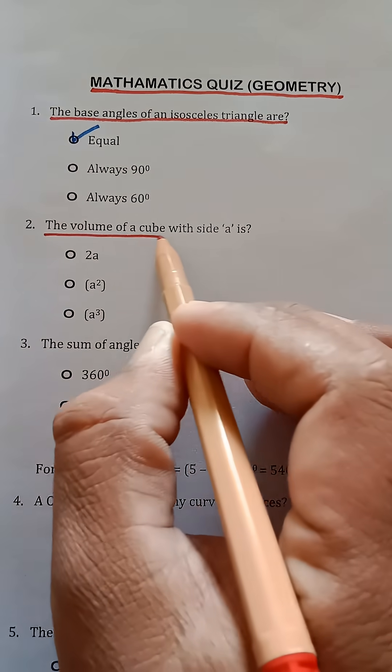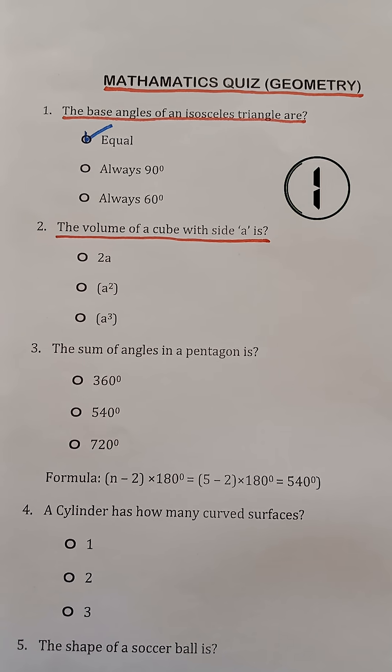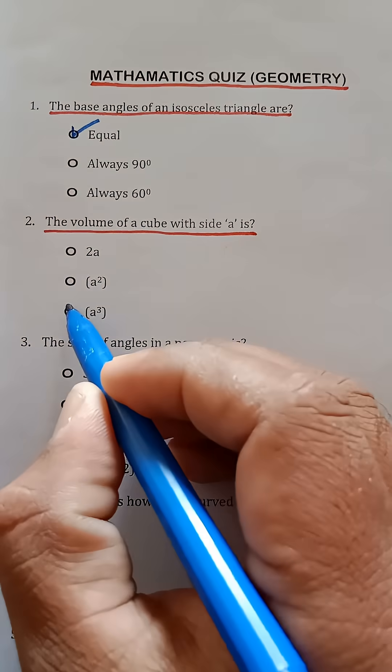Question 2. The volume of a cube with side 'a' is? a³.